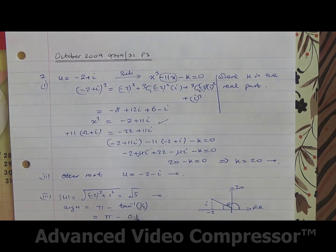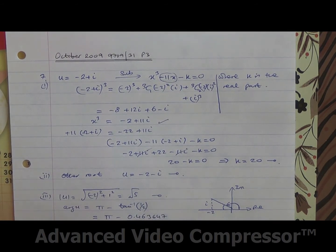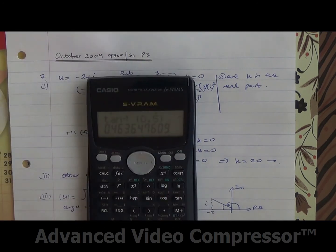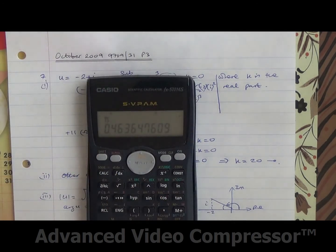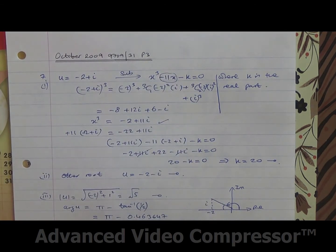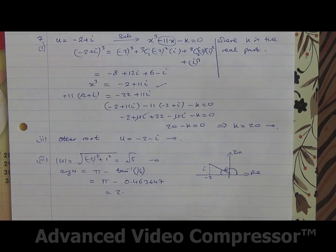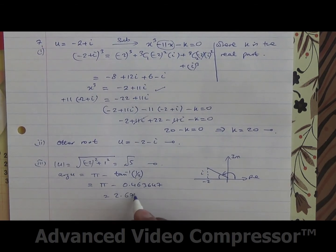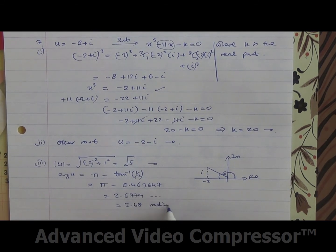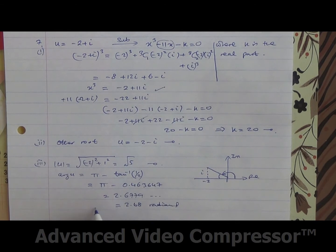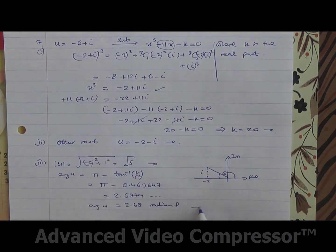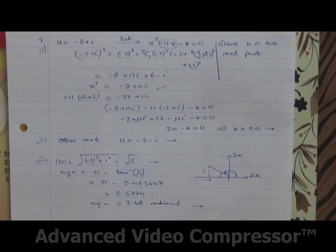And if you subtract this from pi, 2.6779, and that's going to be 2.68 radians. So this is going to be the argument of u. There we are for the second part.